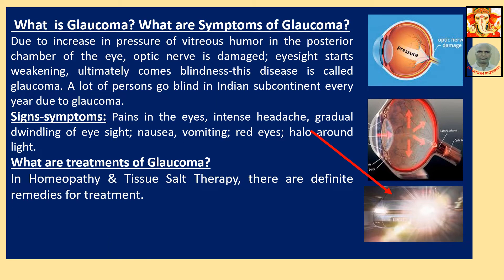What is glaucoma? Due to increase in the pressure of vitreous humor in the posterior chamber of the eye, the optic nerve is damaged, eyesight starts weakening, and ultimately blindness results. This disease is called glaucoma, and lakhs of persons in the Indian subcontinent go blind every year due to it. Signs and symptoms include pain in eyes, intense headache, gradual dwindling of eyesight, nausea, vomiting, red eyes, and halo around lights. In homeopathy, there are definite remedies for treatment.